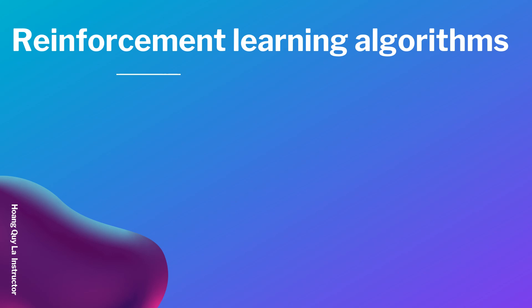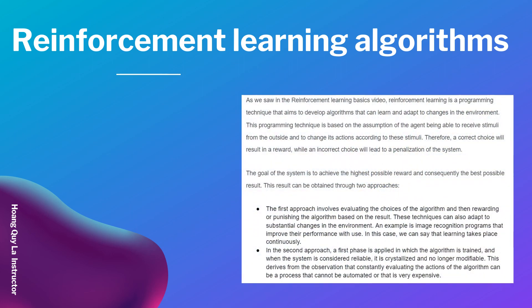Let's continue with our section. In this video I want to talk about reinforcement learning algorithms. As we saw in the reinforcement learning basics video, reinforcement learning is a programming technique that aims to develop algorithms that can learn and adapt to changes in the environment. This technique is based on the assumption of the agent being able to receive stimuli from the outside and to change its actions according to these stimuli. A correct choice will result in a reward, while an incorrect choice will lead to a penalization of the system. The goal of the system is to achieve the highest possible reward and consequently the best possible result.